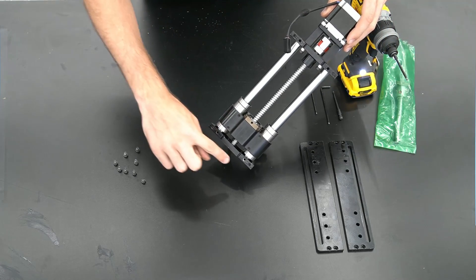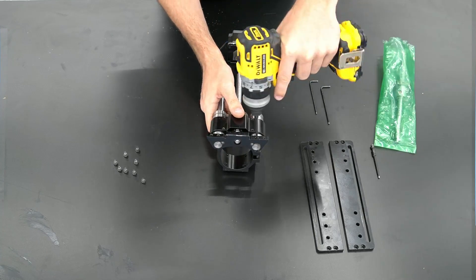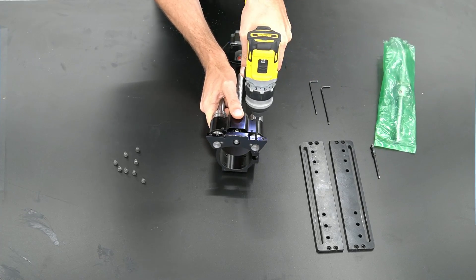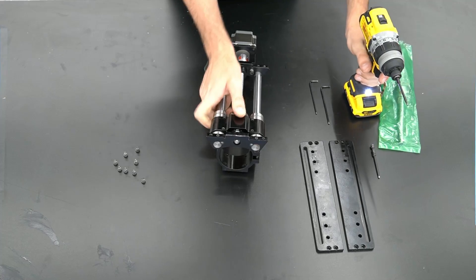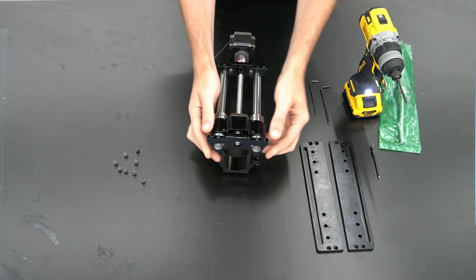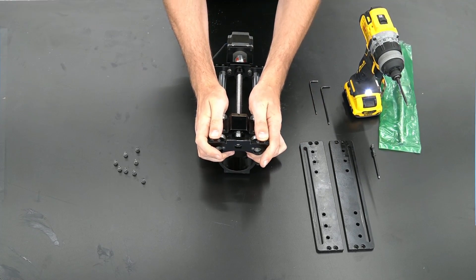With these mounting plates removed, we can now loosen the two set screws on the bottom bracket of the Z slider. With those two set screws loosened, we can slide the bracket off of the bottom of the two Z slider rods.